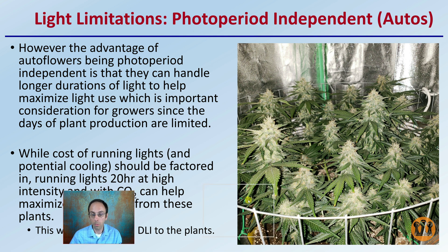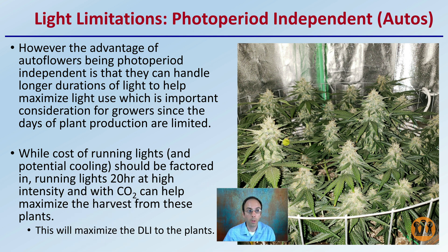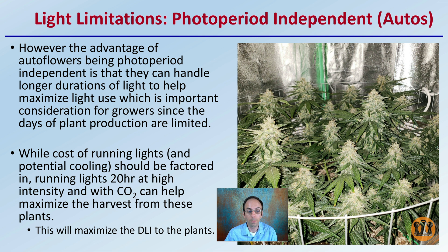For photoperiod independent plants such as autoflowers, the advantage is that they can handle longer durations of light to help maximize light intake — an important consideration for growers since the days of plant production are limited. Running lights longer for autoflowers can help increase productivity, giving them a better chance to produce the necessary sugars and cannabinoids. Running plants for 20 hours at high intensity with carbon dioxide can help maximize the harvest by maximizing the DLI. Keep in mind there's only so much plants can use under ambient CO2 levels, so enriching that environment will increase the intensity they can utilize.